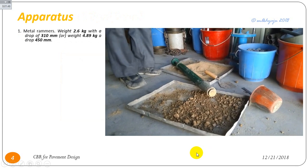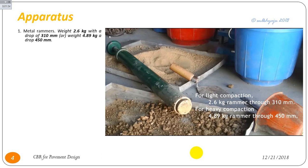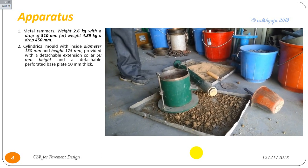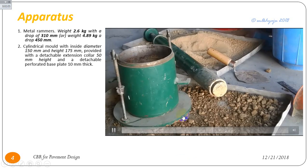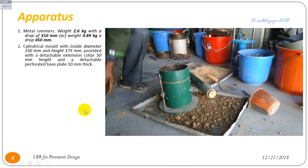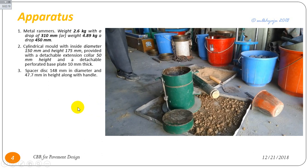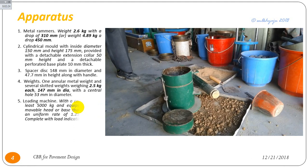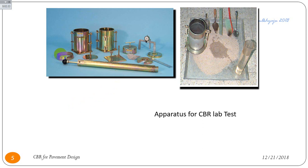The apparatus includes a metal rammer weighing 2.6 kg with a drop of 210 mm for light compaction, and 4.89 kg with a drop of 150 mm for heavy compaction. A cylindrical mold of inside diameter 150 mm, height 175 mm, and a base of 10 mm thickness is used, along with a detachable extension collar, and a special disc of 148 mm diameter and 47.7 mm height. This figure shows the different equipment used for the CBR test.